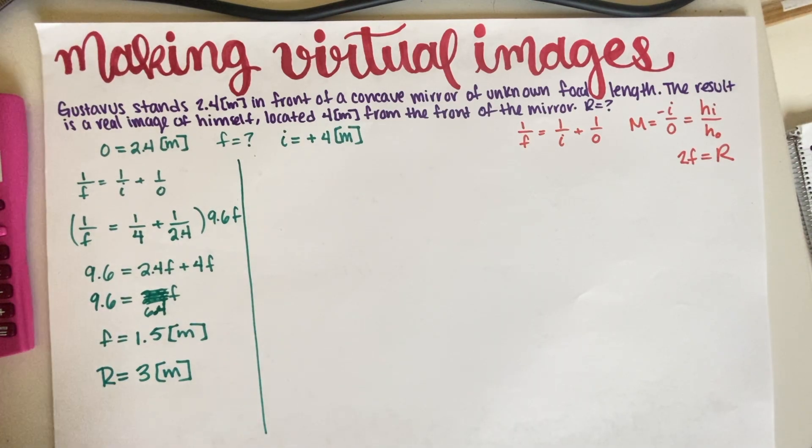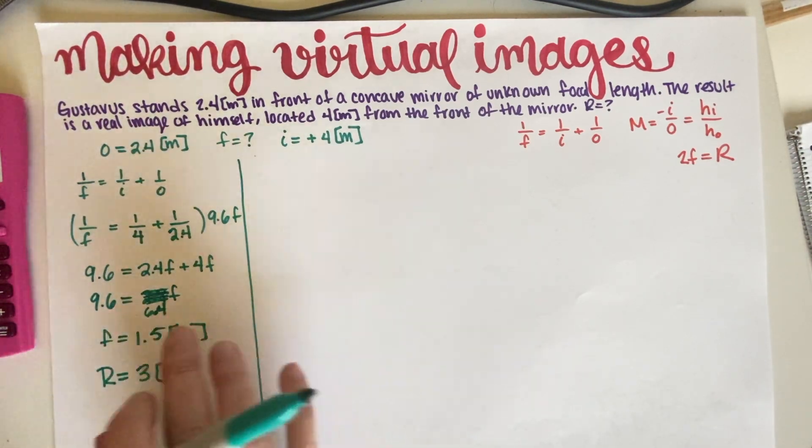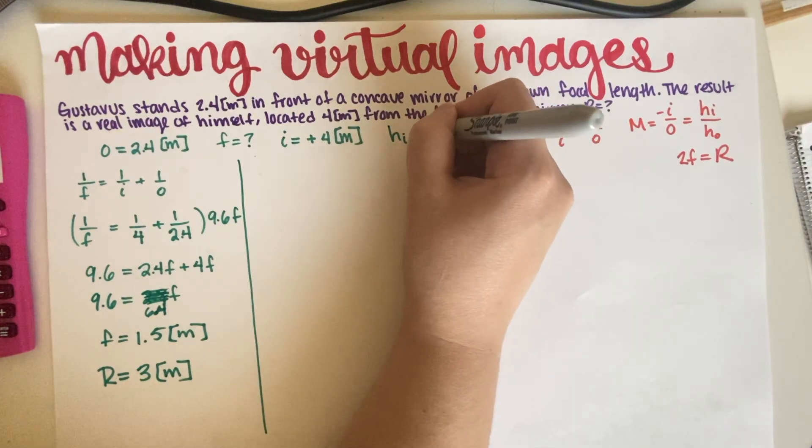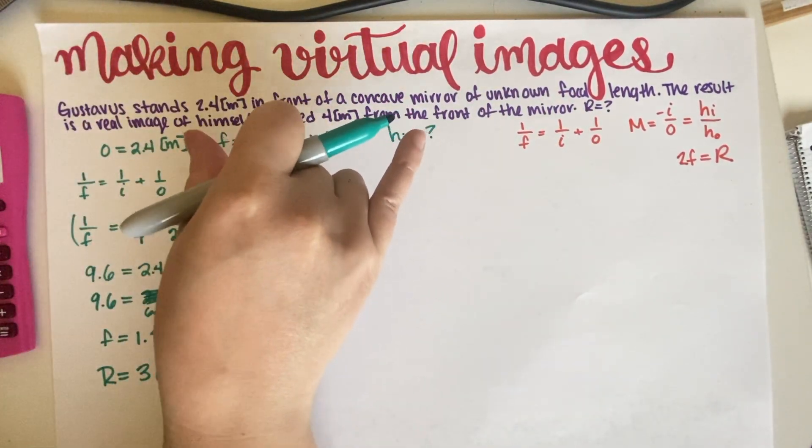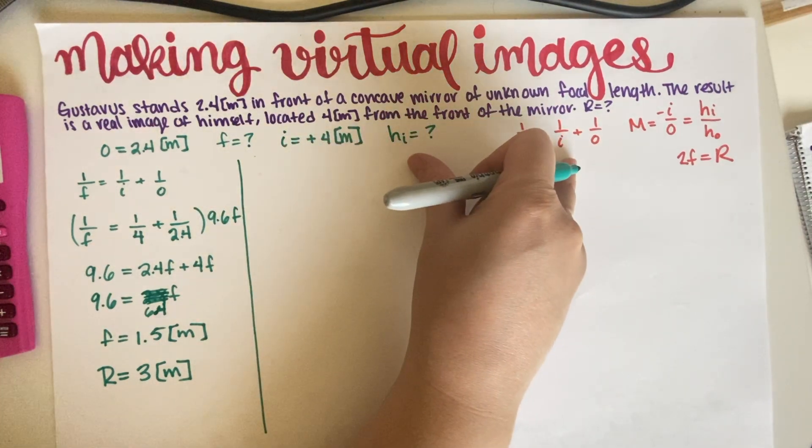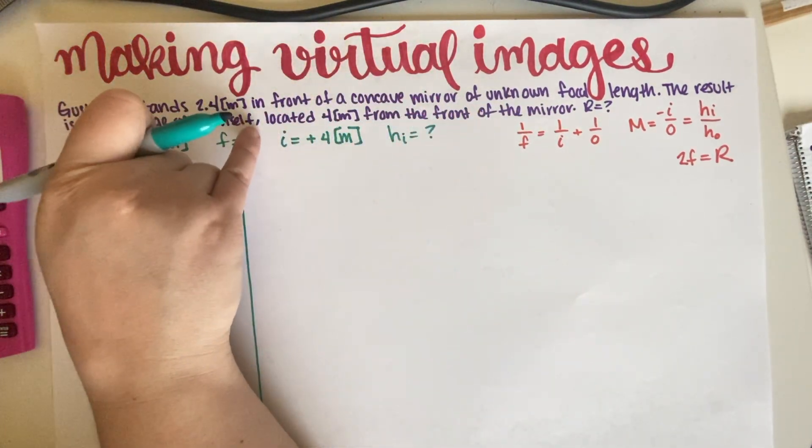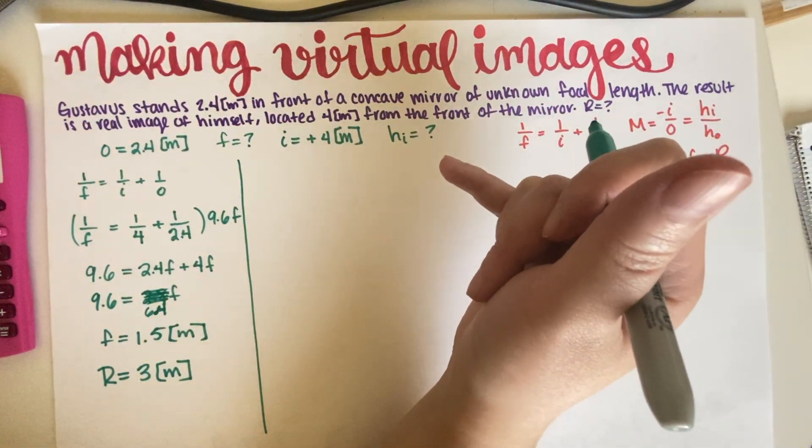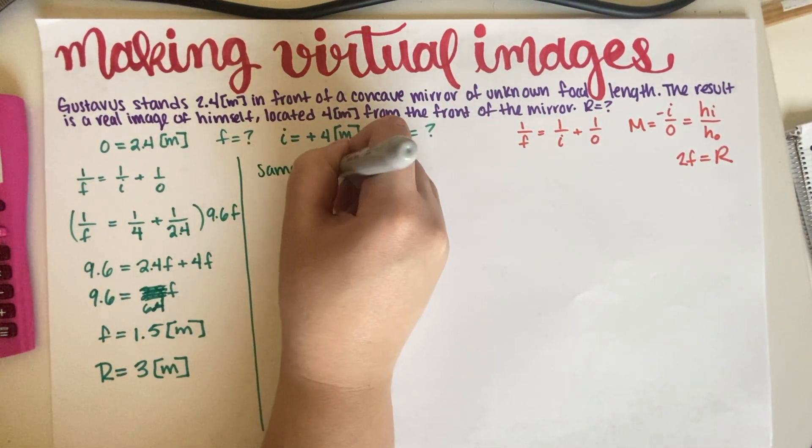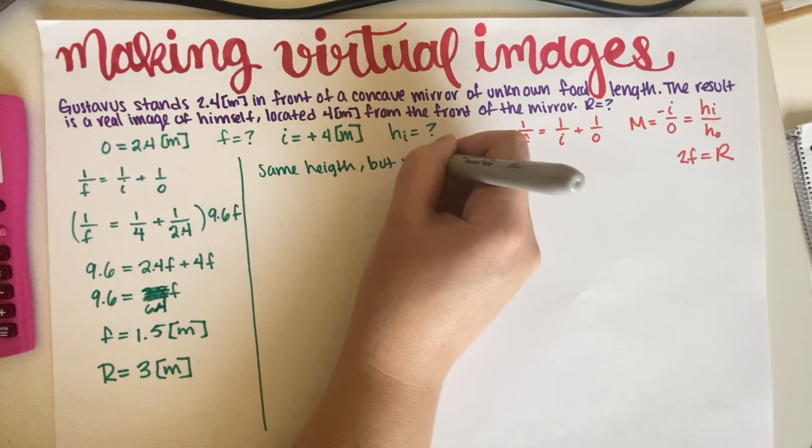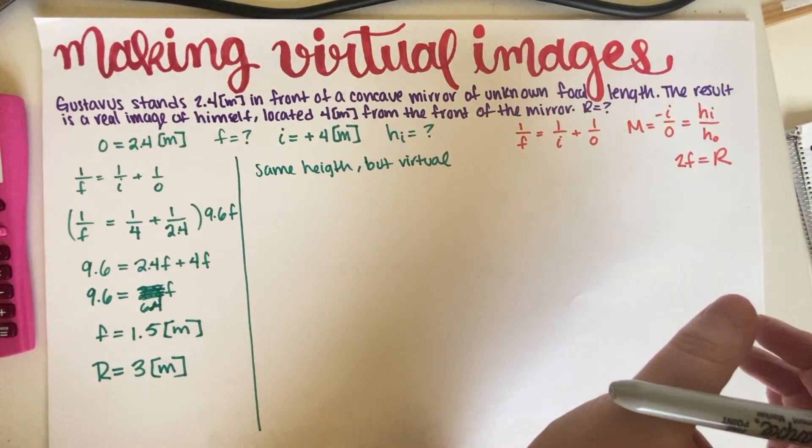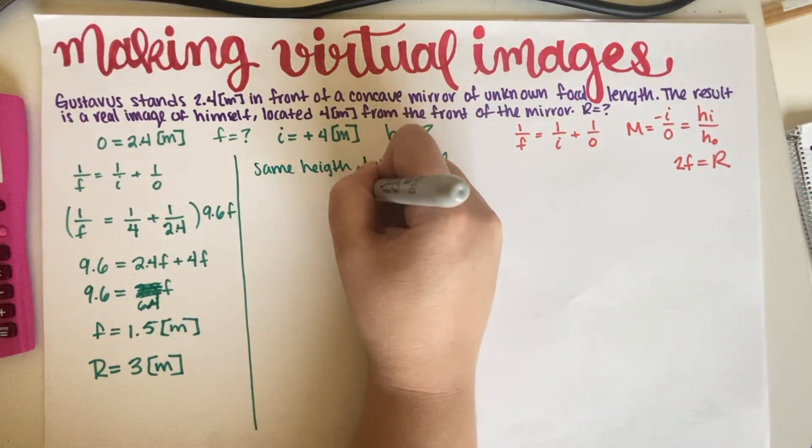Okay. So basically, you know, Gustavus is producing a certain image at a certain height. We really don't know what the height is. But whatever that height is, he wants to produce that exact same height, except he wants it to be virtual this time. So the original image was real, but now he wants a virtual image that is the exact same height.